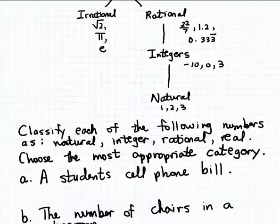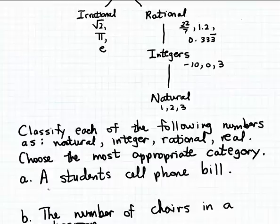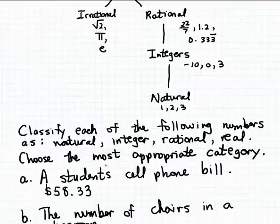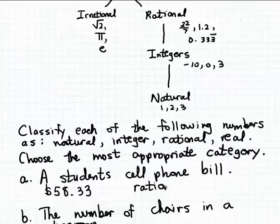Let's start by considering example A: a student's cell phone bill. Think about your own cell phone bill — it's typically an amount in dollars and cents. For example, a typical cell phone bill might be something like $58.33. That is a decimal quantity and it's a terminating decimal. Terminating decimals are rational numbers, so we would probably use a rational number to measure a student's cell phone bill. The answer is rational.